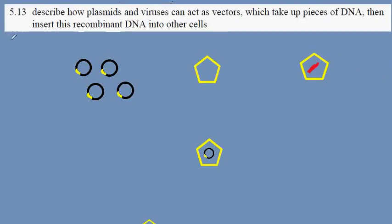IGCSE Biology Syllabus Statement 5.13. Here we'll be looking at the way in which recombinant DNA is transferred into other cells. This is 5.13b.